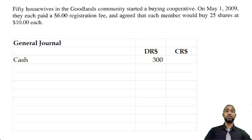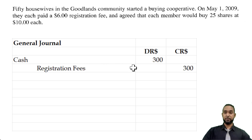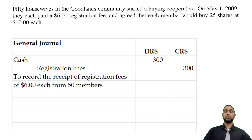The corresponding credit is: where did the cash come from? It came in from registration fees, so that account is going to be credited. Registration fees goes under the credit side, and you can see the indentation here. And of course, you put in a very short narrative — to record the receipt of registration fees of $6 each from 50 members.